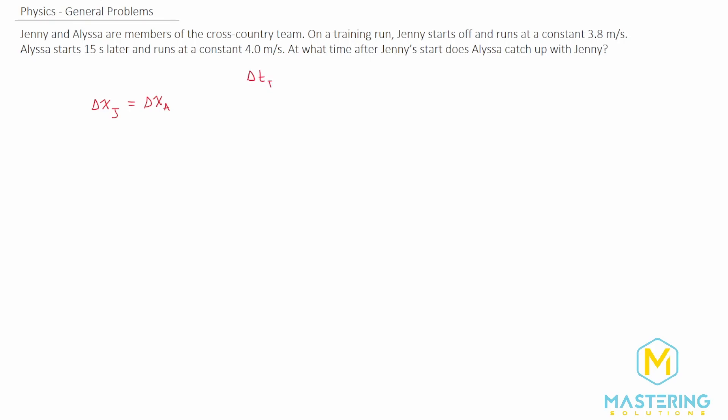We'll say delta t for Jenny is equal to just time. But for Alyssa, we're going to minus 15 seconds because Jenny will have been running for 15 seconds longer than Alyssa will have.